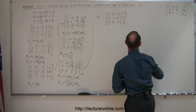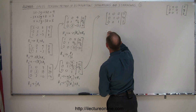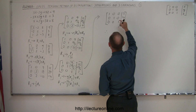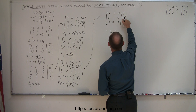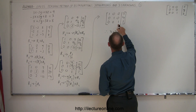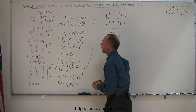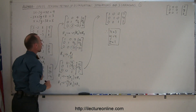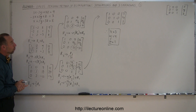And I'm done. I have exactly the format I want, which means one times x equals three, so x equals three; one times y equals four, so y equals four; and one times z equals one, so z equals one. That is the solution to the set of linear equations, and that's how you use the Gauss-Jordan method of elimination.